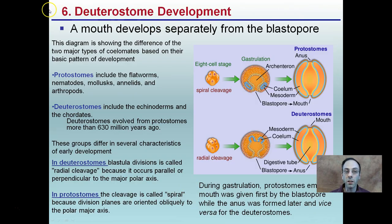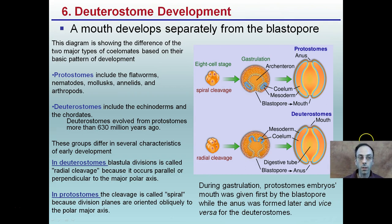The most complicated transition is deuterostome development, where a mouth develops separately from the blastopore. This diagram shows the difference between two major coelomate groups based on their basic pattern of development. We have protostomes and deuterostomes. Protostomes are more primitive and include flatworms, nematodes, molluscs, and annelids.